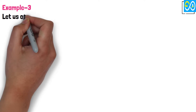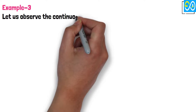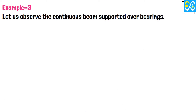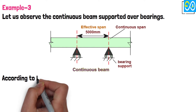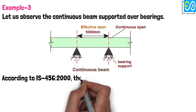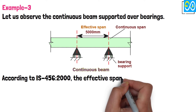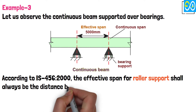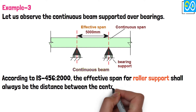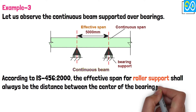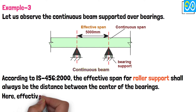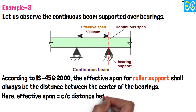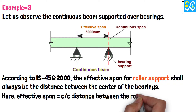Example 3: Let us observe the continuous beam supported over bearings. According to IS 456-2000, the effective span for roller support shall always be the distance between the center of the bearings. Here, the effective span equals the center-to-center distance between the rollers = 5,000 mm.